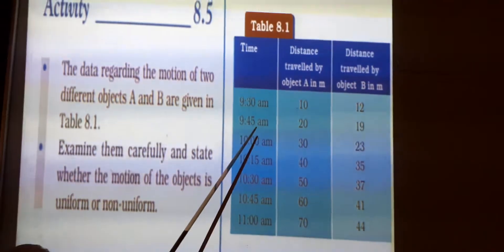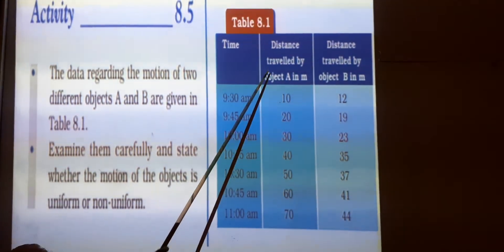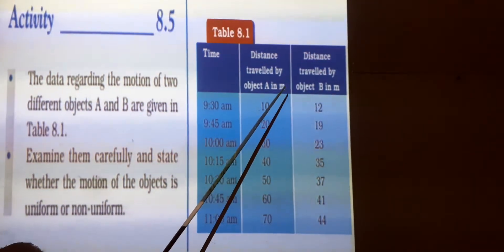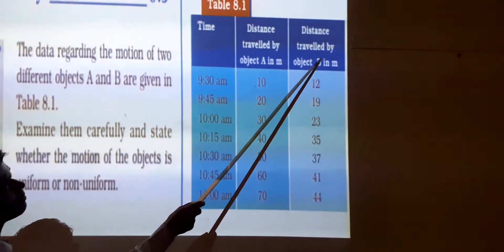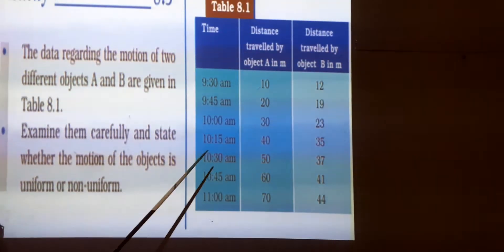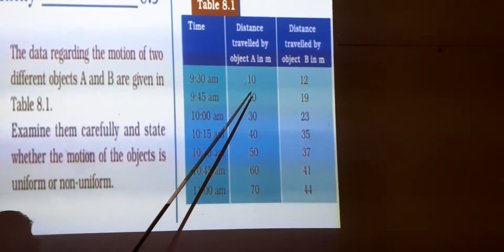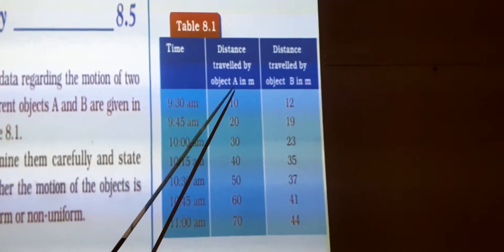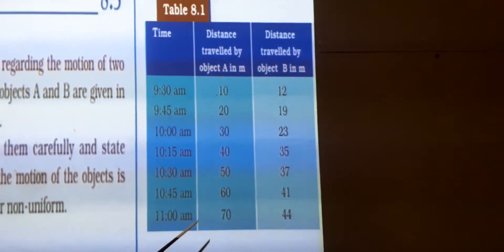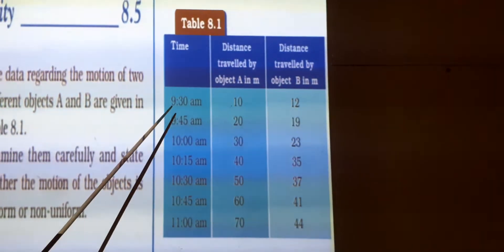So let us see the data first. In the first column, the times are given. In the second column, the distance travelled by object A in meters is given. And in the third column, the distance travelled by object B in meters is given. Now we have to check which object, A or B, is in uniform motion and which is in non-uniform motion. Observe carefully the time interval.